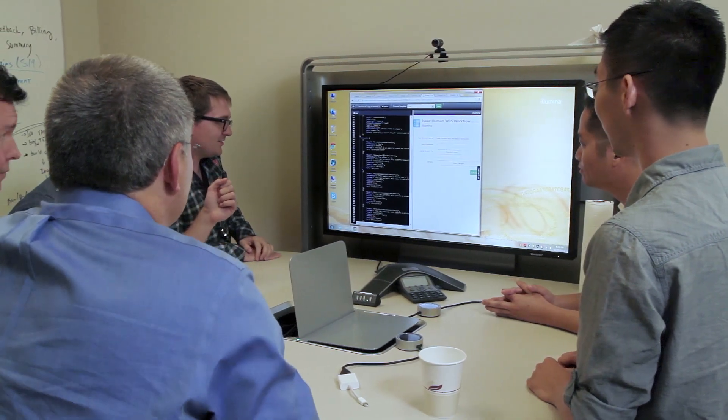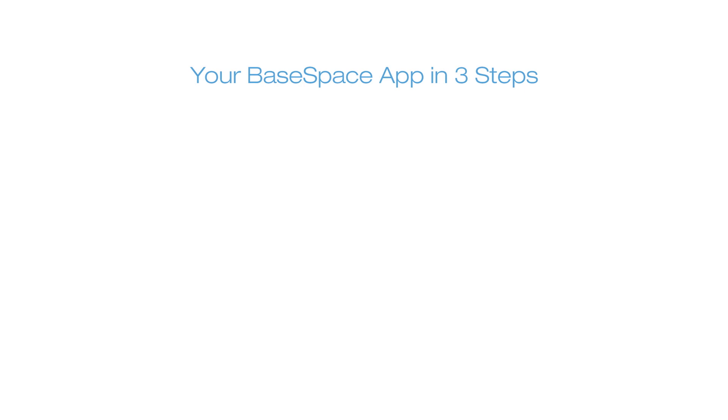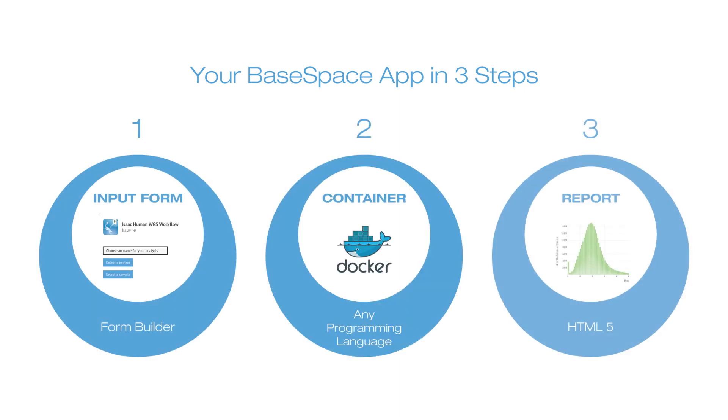An app written with the new app engine in BaseSpace consists of three main components: the input form, the container, and the output reports. Any algorithm or analytical approach that can be written in a local Linux environment can be easily packaged up and run in BaseSpace. Once configured, your app can be shared with all BaseSpace users, and all of this can be set up through an easy-to-use web interface.